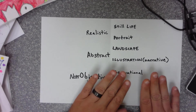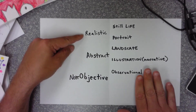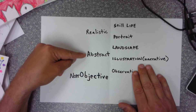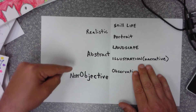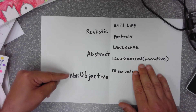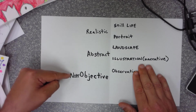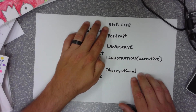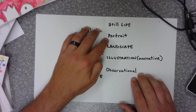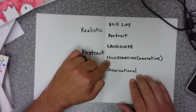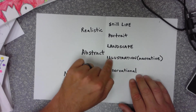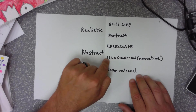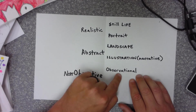Let's review quickly. Realistic is made to look real. Abstract has a subject but doesn't look real — you can tell what it is, but it's simplified. Non-objective has no objects at all — it doesn't look real and has no subject. Still life is when things are still and the artist draws them. Portrait is a drawing of a person. Landscape is a drawing of land. Illustration is a narrative or storytelling within the picture.